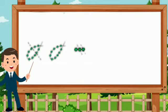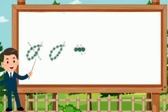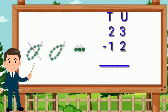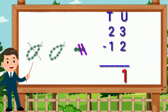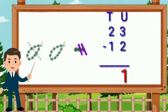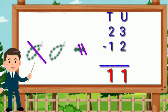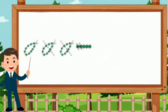Here we have two strings of ten beads and three single beads. So let's arrange vertically and subtract. 23 minus 12. First subtract the units from the units: 3 minus 2 is equal to 1. Then subtract the tens from tens: 2 minus 1 is equal to 1. So 23 minus 12 is equal to 11.